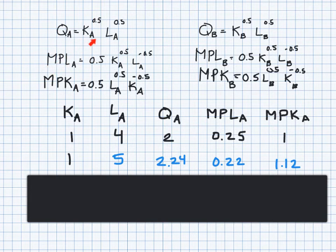To find the marginal product of labor, I just took the derivative of QA with respect to LA. And that's what we have right here. And to find the marginal product of capital, I just took the derivative of QA with respect to KA. And that's what we have right there.